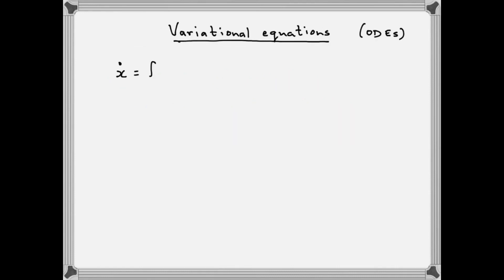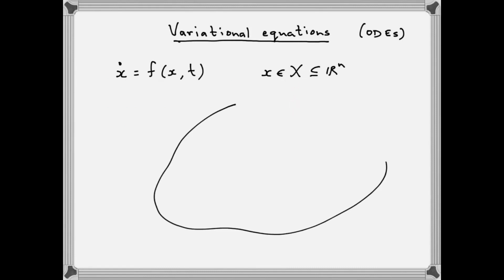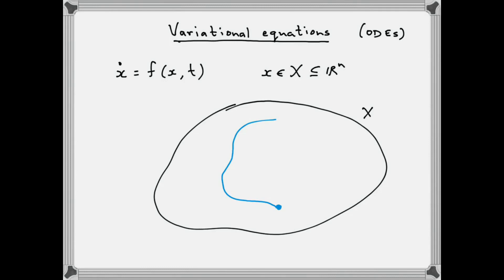Suppose we have an ODE written in standard form, where x belongs to some open subset of R^n. We'll assume that our ODE satisfies conditions for existence and uniqueness of solutions. Now let's consider some initial condition in the state space of this ODE, and follow the trajectory of this initial condition in forward time. Existence and uniqueness of solutions means that this trajectory is uniquely defined.